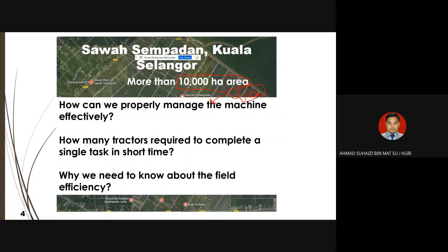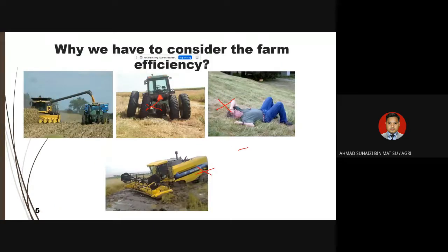In order to understand field efficiency requirements, there are some conditions where we cannot consider certain factors as part of effective field output. For example, during harvesting, some activities are considered part of the field operation — a tractor alone on one side can help with operations.